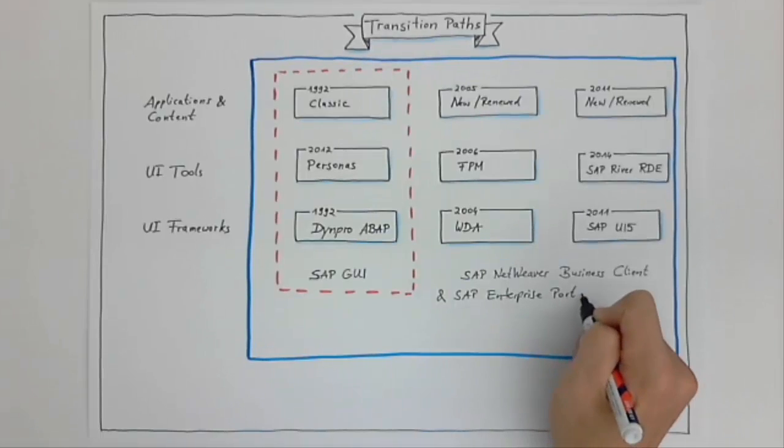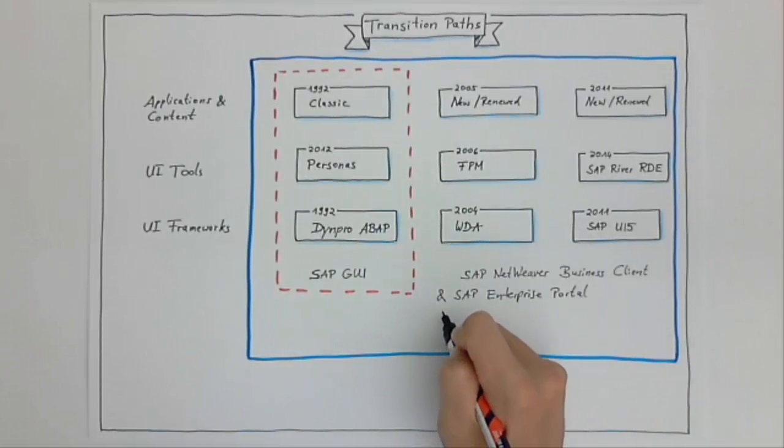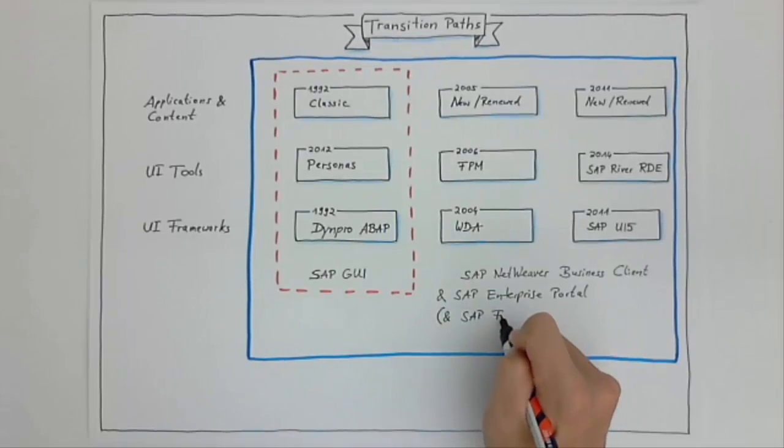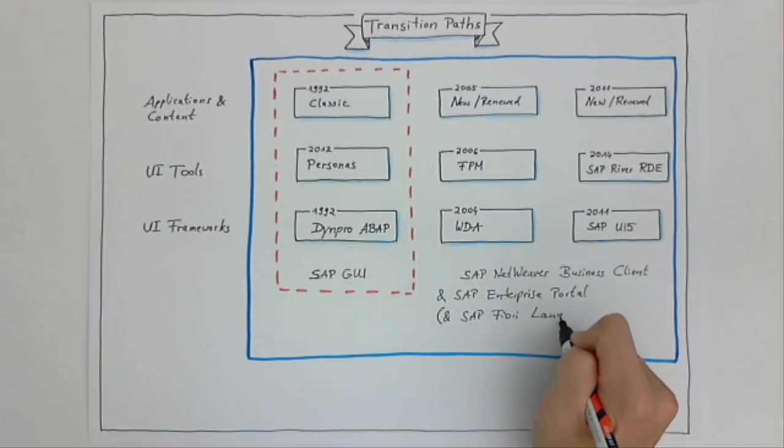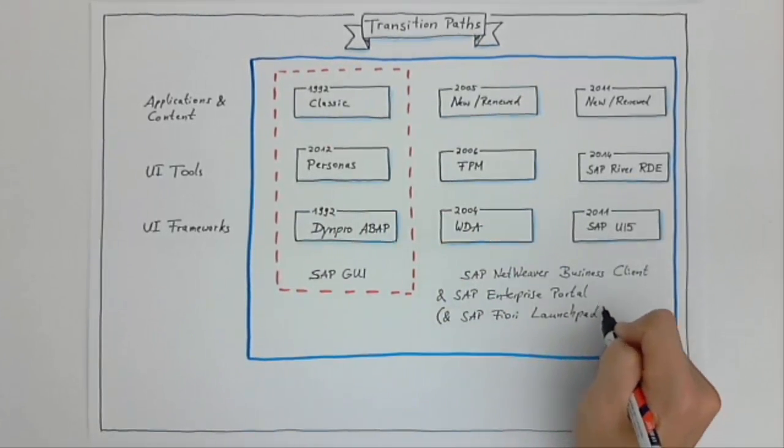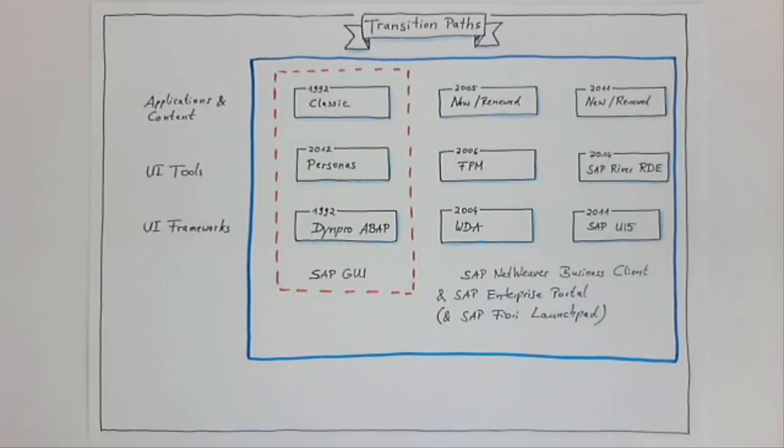To complete the picture we should also mention the SAP Fiori Launchpad. This launchpad was mainly intended as a standalone UI client for SAP Fiori applications. Running standalone it can also integrate WebDynpro ABAP and Dynpro ABAP. However, the SAP Netweaver Business Client and the SAP Enterprise Portal remain the UI clients with the strongest integration capabilities and are more recommended for extensive integration cases.